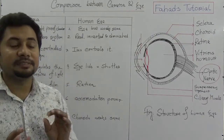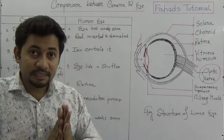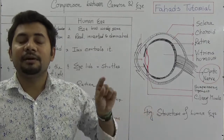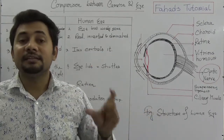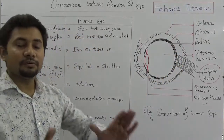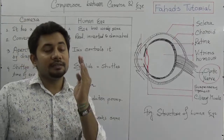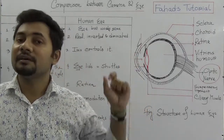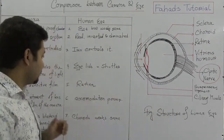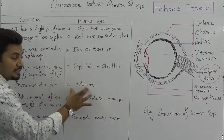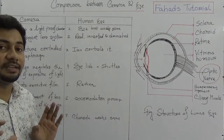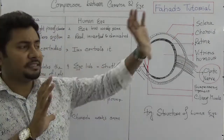Number five is the photosensitive film. The image formed in a camera is recorded on the photosensitive film. But inside human eyes, the image is formed on the layer called the retina. So the photosensitive film in the camera and the retina in the eye are doing the same thing — they are both where the image is formed.